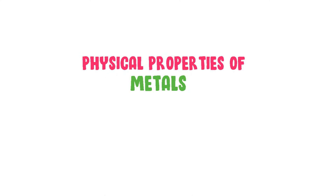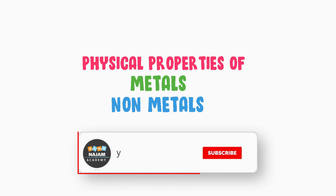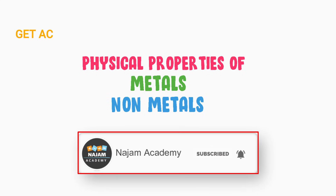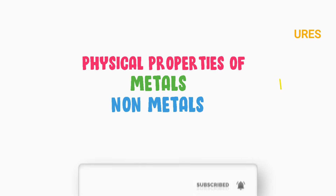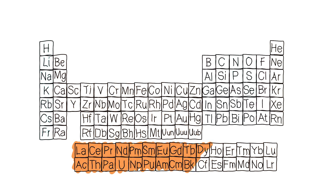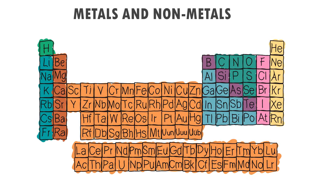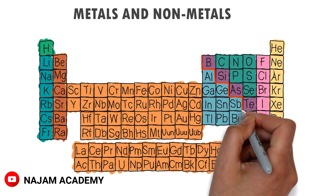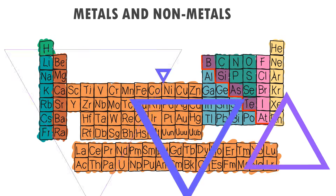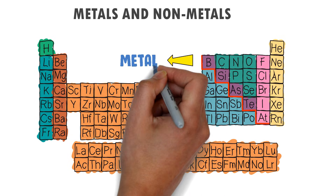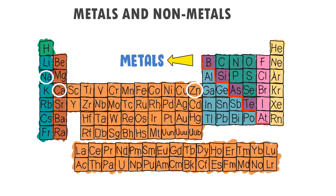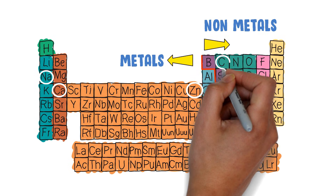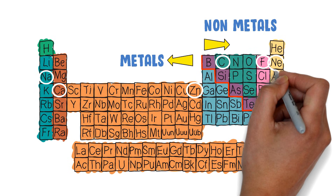Physical Properties of Metals and Non-Metals. Let me teach you about the classification of metals and non-metals in the periodic table. This line separates metals from non-metals. The elements at the left side of this line are metals — for example, sodium, calcium, and zinc. While the elements at the right side of this line are non-metals — like carbon, fluorine, and neon.